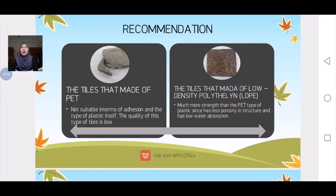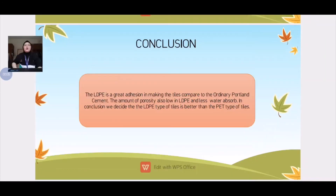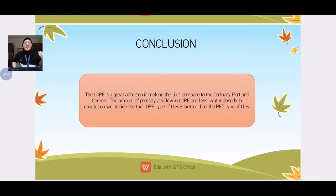For recommendation, the tiles made of PET — polyethylene plastic mixed with cement — are not suitable in terms of addition and the type of plastic itself, and the quality of this type of tile is low. The tiles made of low density polyethylene (LDPE) are much stronger than the PET type, since they have less porosity in structure and lower water absorption. All in all, LDPE is a great addition in making tiles compared to ordinary Portland cement. The porosity is low in LDPE and it absorbs less water. We decided that LDPE is the type of tile that can be made rather than PET type. Thank you.